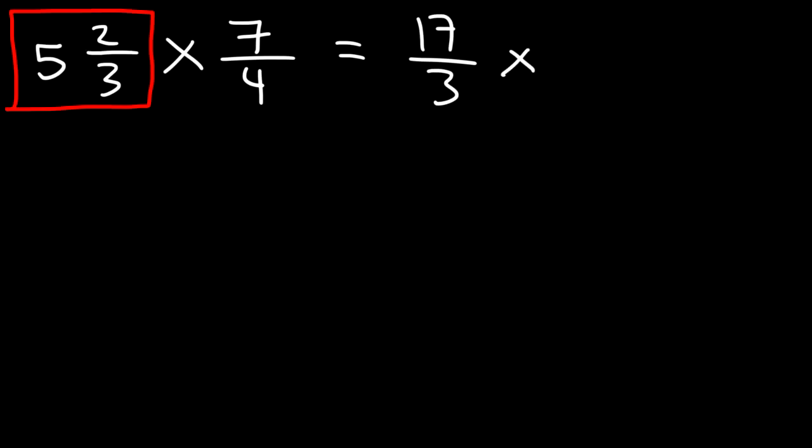So let's multiply 17/3 by 7/4. What is 17 times 7? 10 times 7 is 70, 7 times 7 is 49, so 70 plus 49 that's going to be 119.